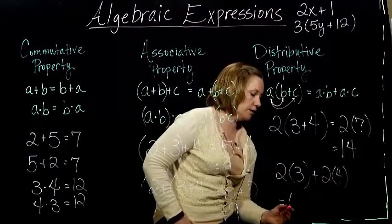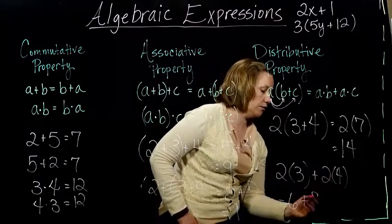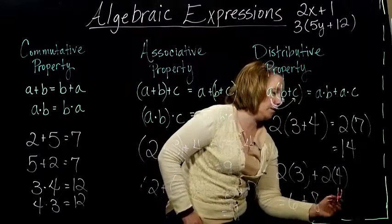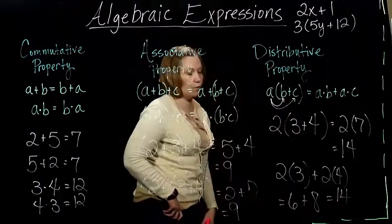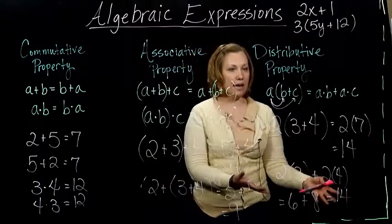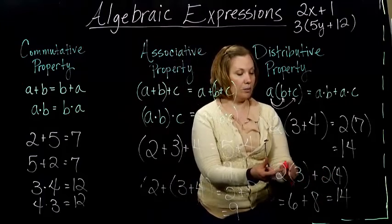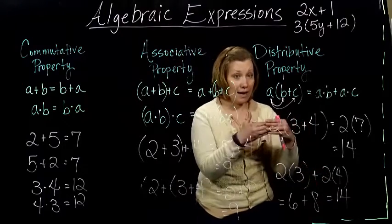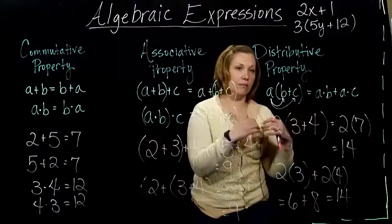Well, 2 times 3 gives me 6. 2 times 4 gives me 8. And sure enough, I get 14. So we get the same answer whether we multiply the 2 to each piece and then add, or whether we add first and then multiply last.